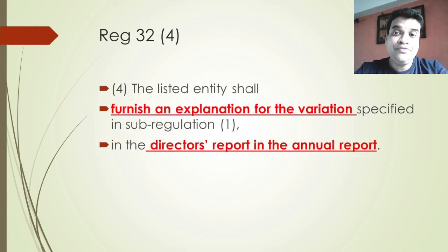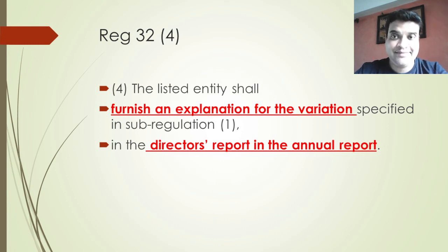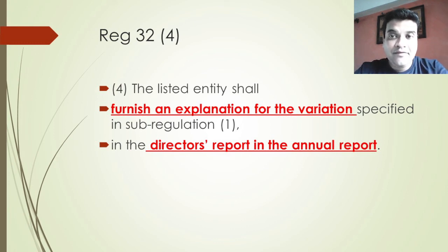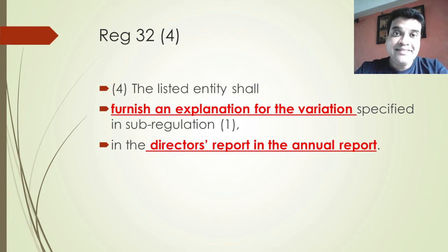Regulation 32(4) states that the listed entity shall furnish an explanation for any variation. Where the monitoring agency found that there were variations, these variations have to be explained, and this explanation will be found in the directors' report of the annual report.